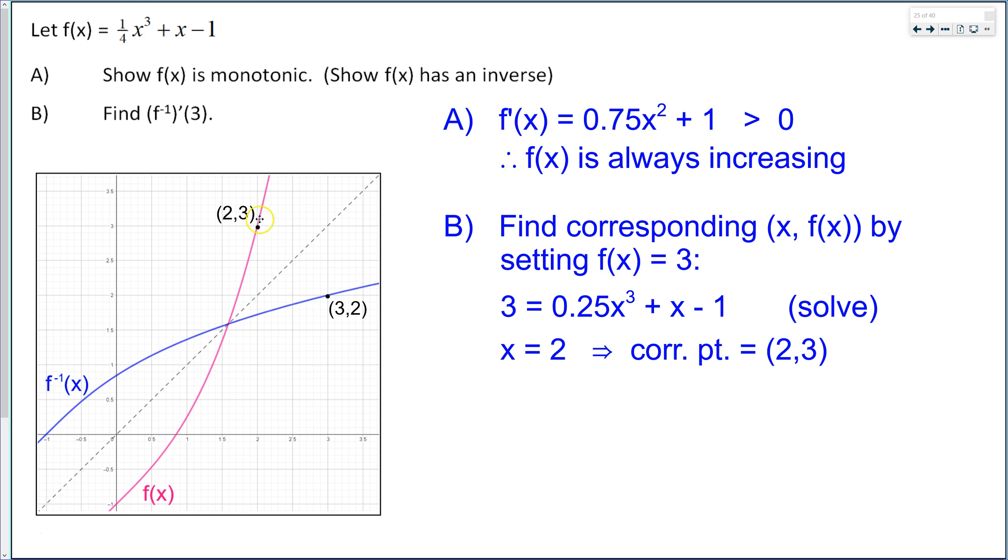So now if we can find the slope at this point, reciprocate it, we will find the slope at that point. So to find the slope at this point, we need to find the derivative and evaluate it at an x value of 2 now. So we already found the derivative. There it is. So if we evaluate that at 2, we get a derivative value of 4. So this green line has approximately, well, it has exactly a slope of 4 if it's a tangent line. And all we have to do to find the slope right there is to reciprocate it. So we will reciprocate our answer, and this is the proper notation. So the derivative of inverse F evaluated at 3 is 0.25, or one quarter.